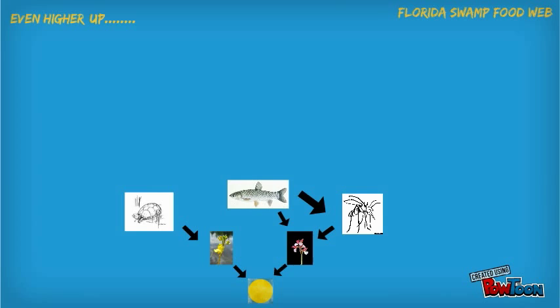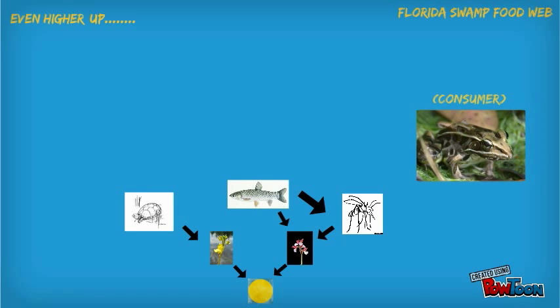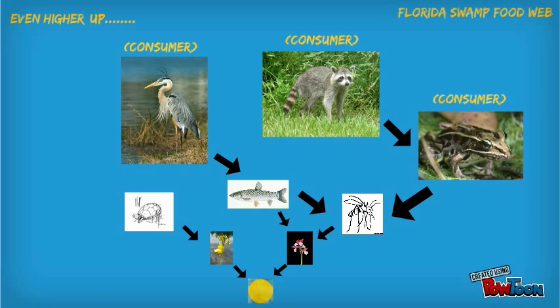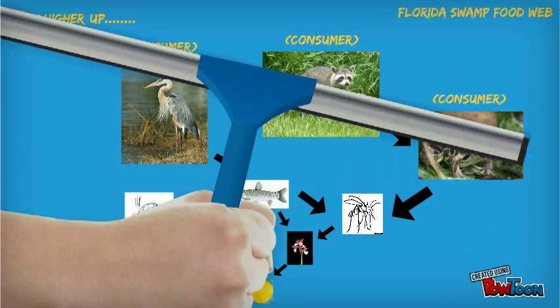Then there's the second level of consumers. In this case we are talking about how the southern leopard frog eats the mosquito. Also a lot of times one organism is in the middle, like where the raccoon consumes the southern leopard frog. The number one predator of the grass carp is the blue heron. These guys make up the second level of consumers.